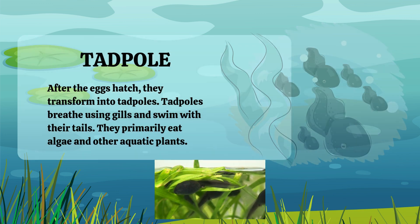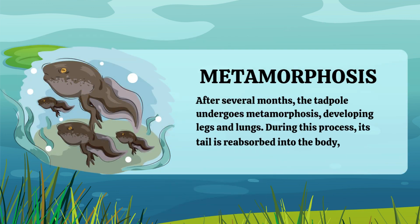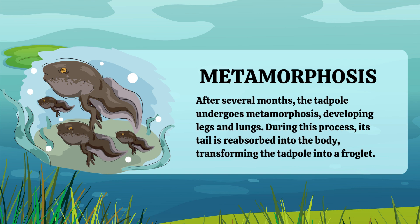After several months, the tadpole undergoes a significant transformation known as metamorphosis. During this process, it develops legs and lungs. The tadpole's tail is gradually reabsorbed into its body, transforming it into a froglet, which is a crucial step in its development.